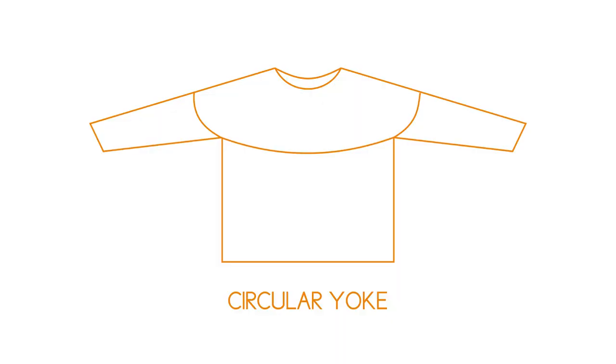The first one is the circular yoke. 'Yoke' means the top of the body — the circular yoke has a tubular shape on the top of the body that includes the shoulders and the bust. There are increases or decreases depending on what size you're working your yoke, and they are completely invisible because they are usually part of the pattern.